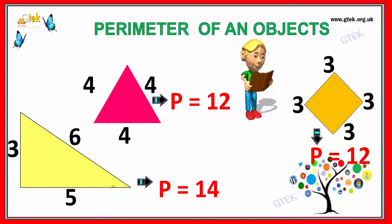And here is another triangle with different size lengths of the edges. You've got 6 here, 5 here, and 3 here. So 3 plus 6 plus 5, which equals 14.